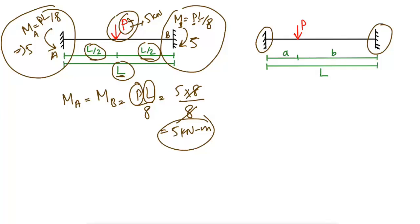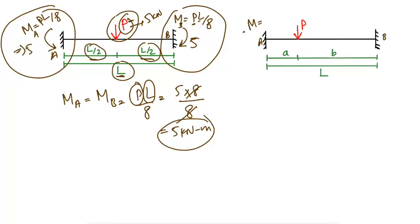Now when the load is not acting at the center of the beam, we find the maximum bending moment in a different way. The moment at A is equal to P·A·B² divided by L², and the moment at B is equal to P·A²·B divided by L², where A is the distance from support A to the load and B is the distance from the load to support B.